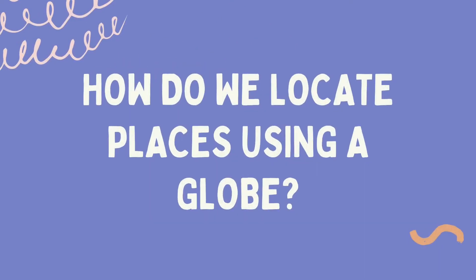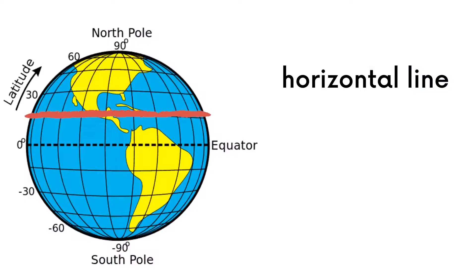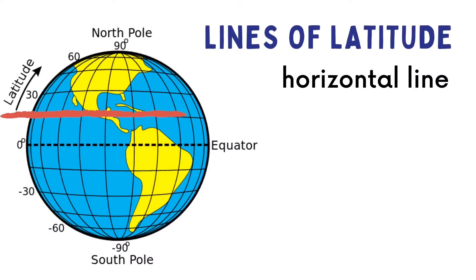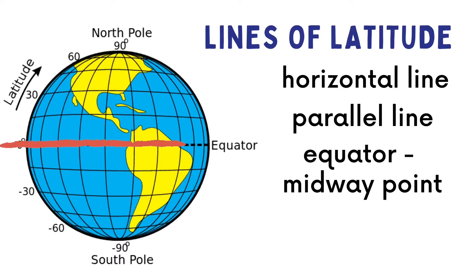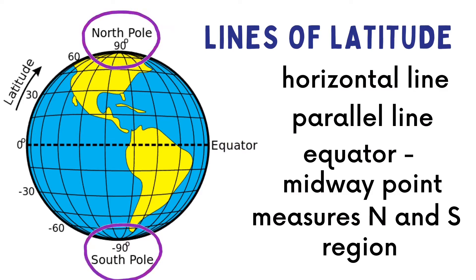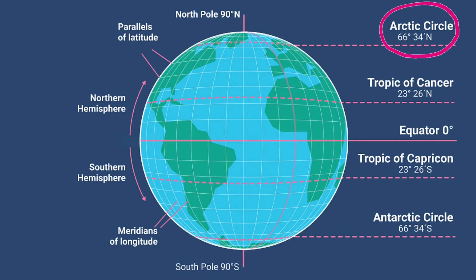But how are we going to locate places using a globe? We have these imaginary lines which are found on a globe: the lines of latitude and the lines of longitude. These lines are measured in degrees. Latitude lines are shown as horizontal lines on a globe. These are also parallel lines which go around but never touch or intersect each other. The equator is a line of latitude which is the midpoint between the northern and southern hemispheres. It divides the Earth into two and also marks the location of zero degrees latitude.